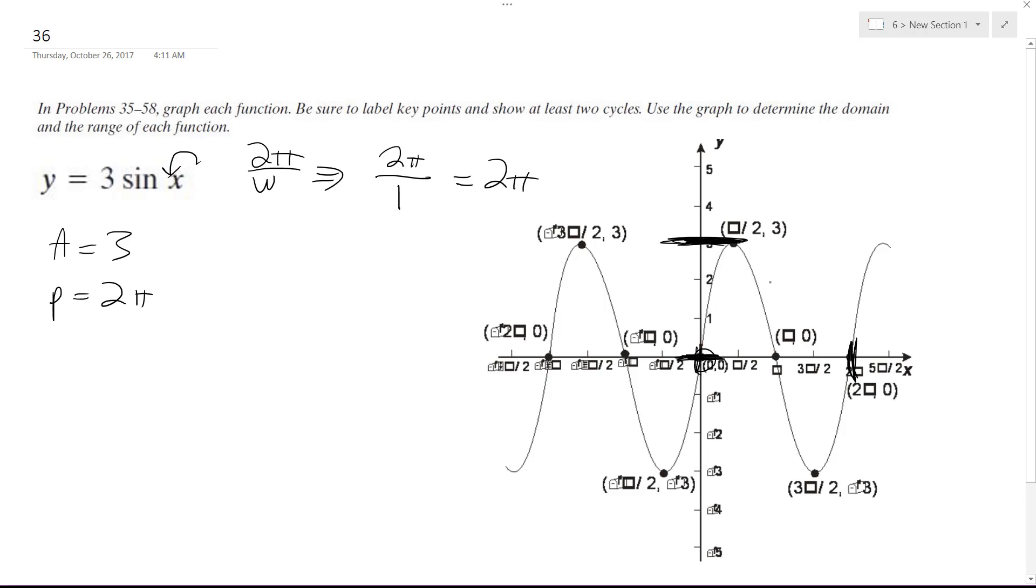So every two pi, it completes one cycle going up and then going down for the sine.